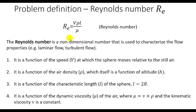The Reynolds number is defined by this relationship, where V is the speed at which the sphere moves relative to the still air, rho is the density of the air assumed to be a function of altitude, L is a characteristic length equal to the diameter of the sphere, and mu is the dynamic viscosity of the air equal to the kinematic viscosity times the density. The kinematic viscosity is assumed to be constant.